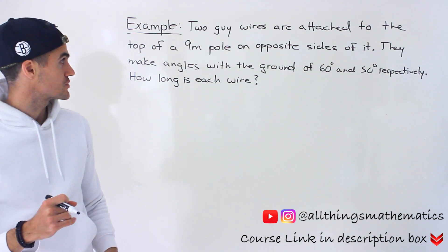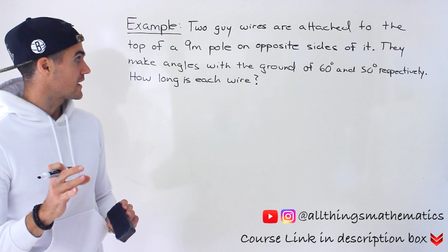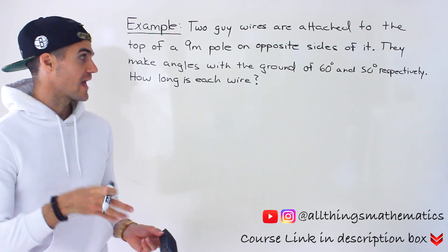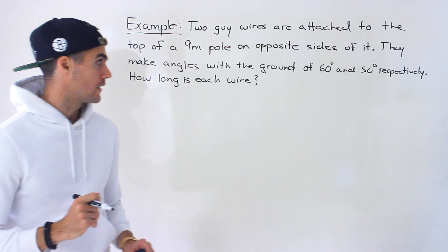So two guy wires are attached to the top of a nine meter pole on opposite sides of it. They make angles with the ground of 60 degrees and 50 degrees respectively. How long is each wire?